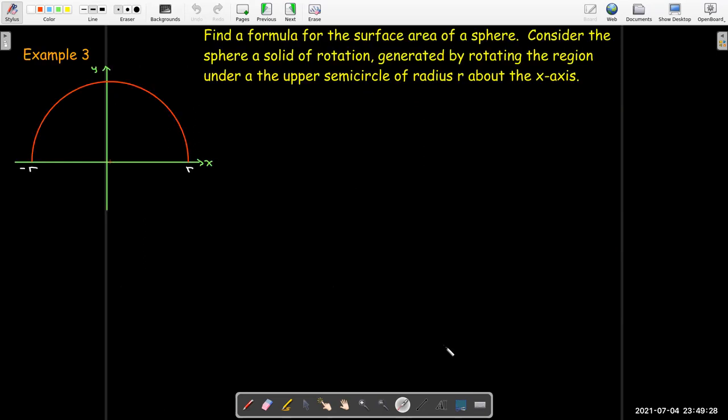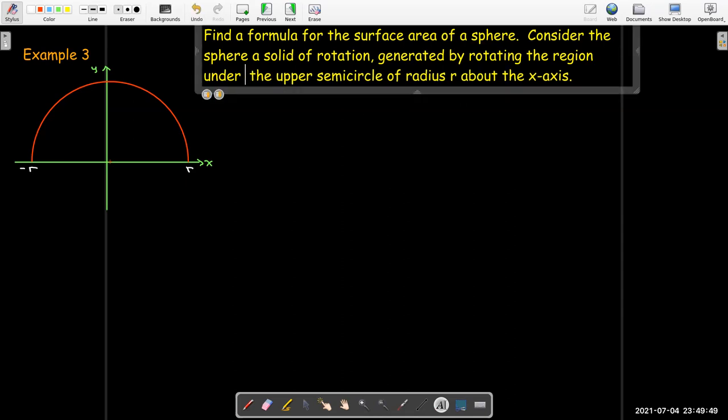So let's go ahead and use that to find a formula for the surface area of a sphere. And the way we're going to do that is consider the sphere as a solid of rotation generated by rotating the region under the upper semicircle of radius r about the x axis. So we're going to have a semicircle centered at the origin. And we're going to rotate it about the x axis. That will generate a sphere. And we're going to try to find the area of the surface of that solid.